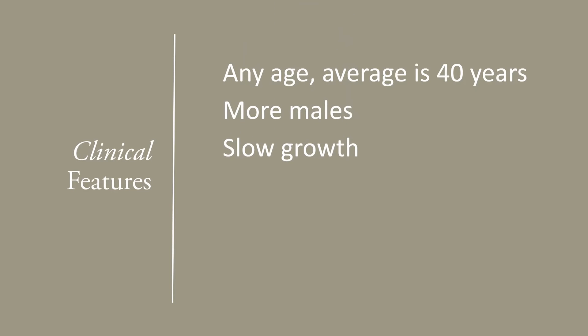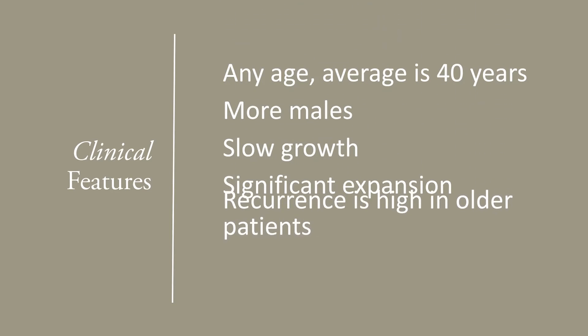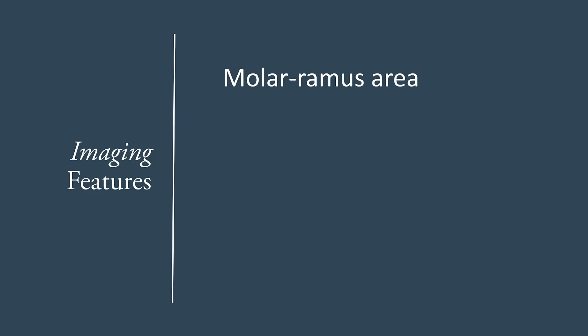This tumor grows slowly without any signs and symptoms in early stages. Therefore, it can become fairly large before it's detected. If untreated, ameloblastoma can become very large. Recurrence is high and higher in older patients. Although ameloblastoma can happen in any area, the most common sites are the molar-ramus region. In the maxilla also, ameloblastoma is commonly found in the molar region.